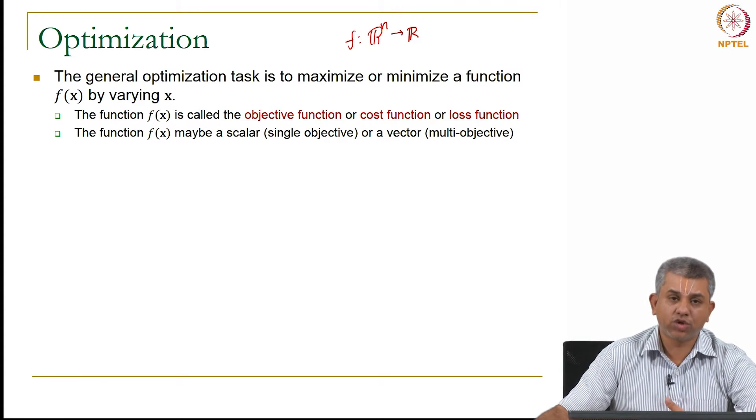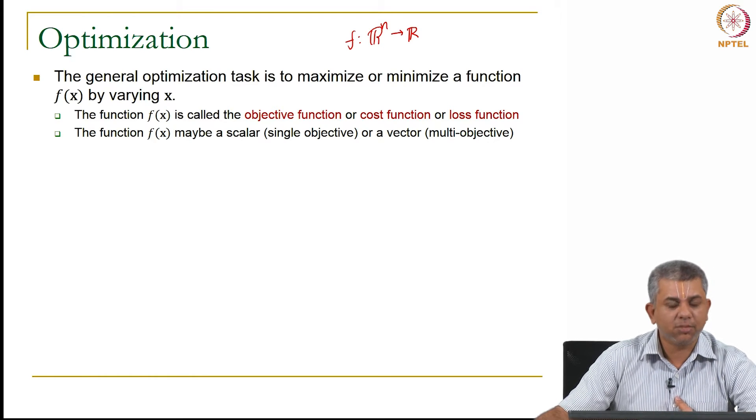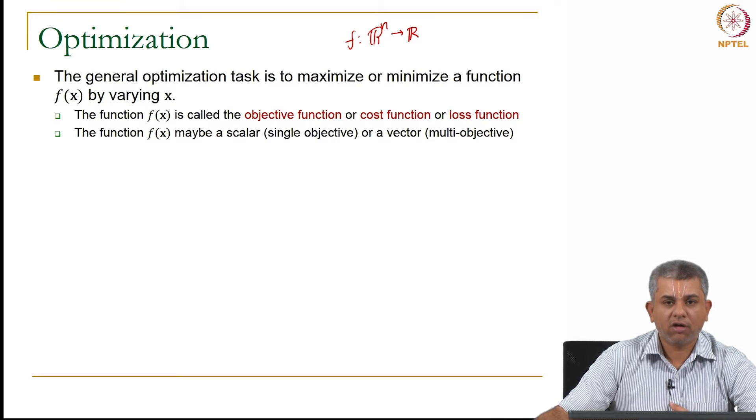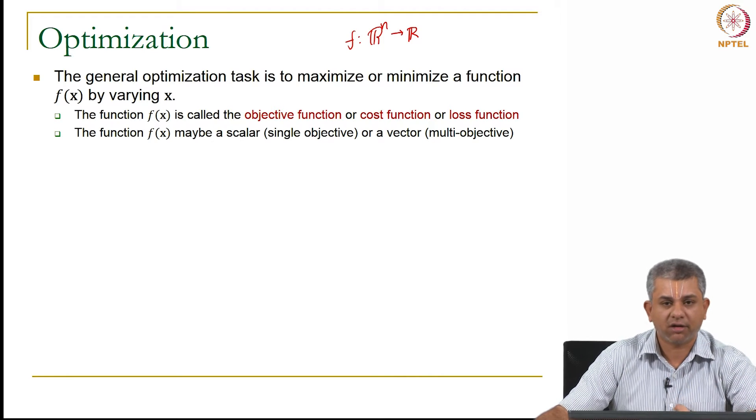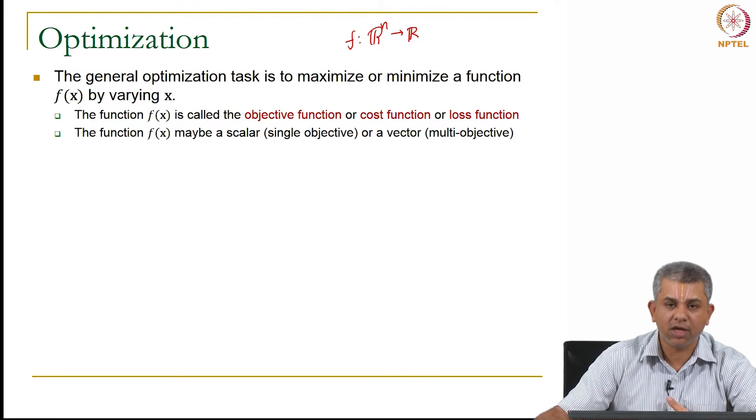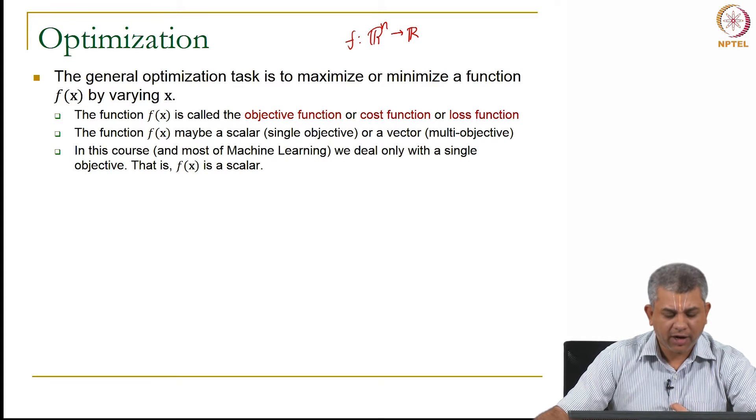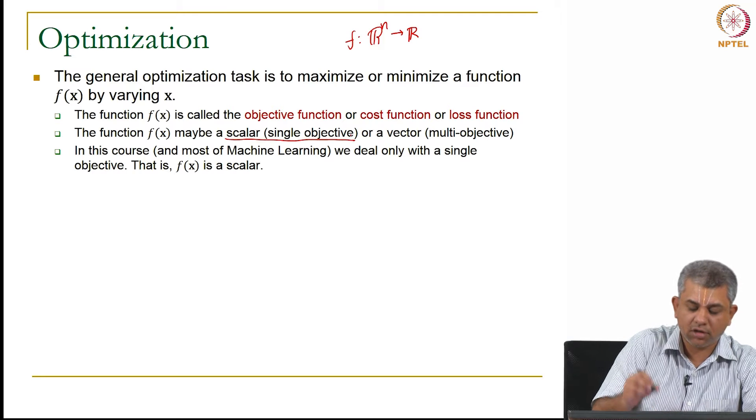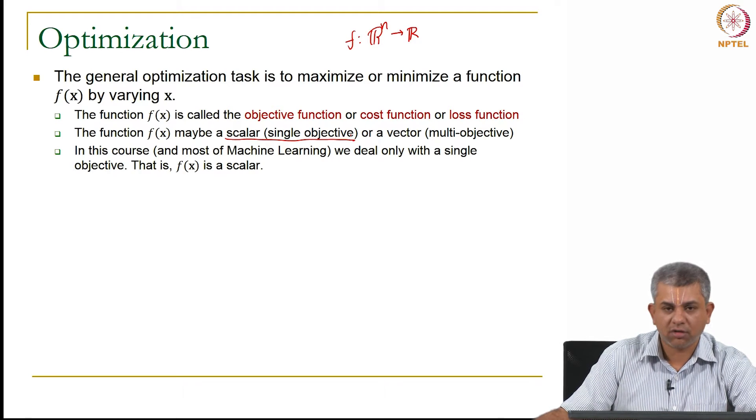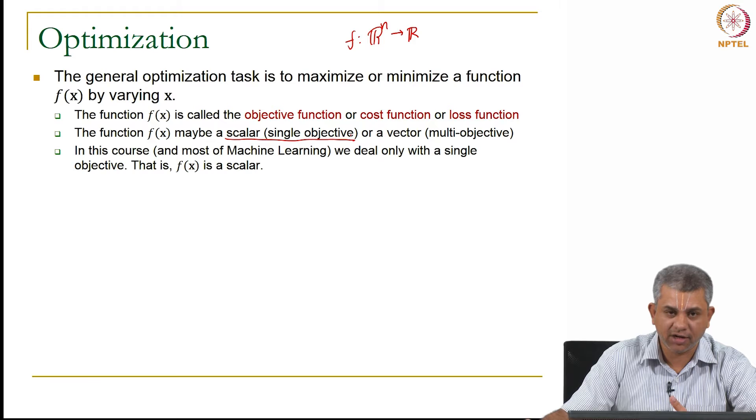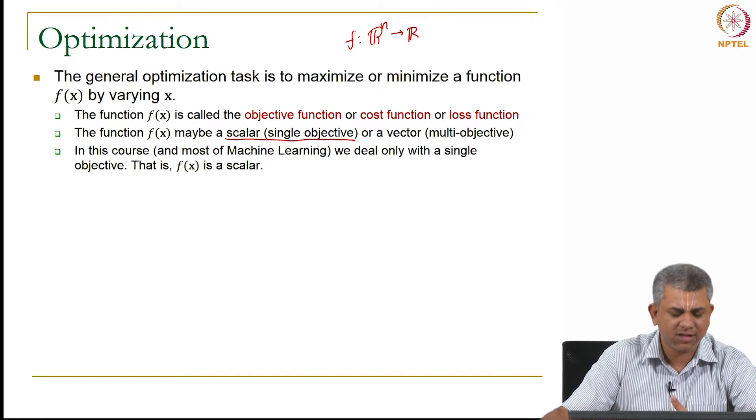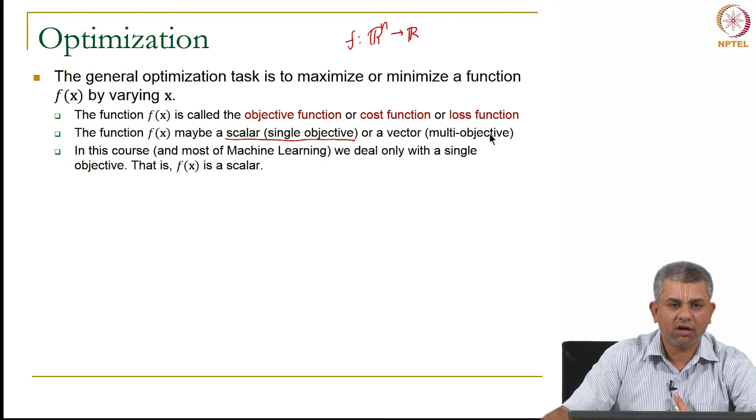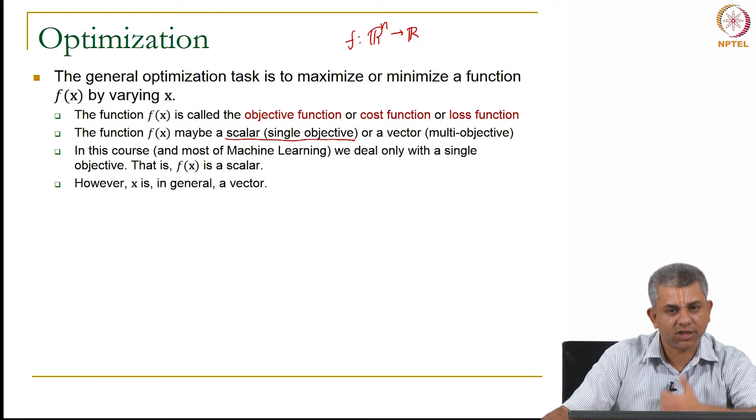So the function usually in a general optimization task can either be a scalar and this is called a single objective optimization problem, or you can have f itself as being a vector. In that case, it could be a multi-objective vector. And in this course, we are going to restrict ourselves to this case, to the single objective optimization problem. This is actually true of most of practical machine learning anyway. We try and define a cost function or an objective function which is a scalar by itself.